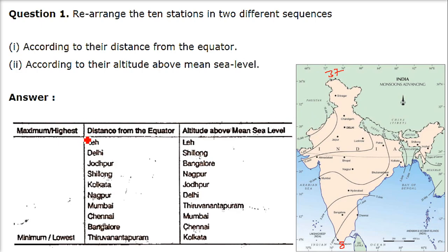So distance from the equator — the maximum should be here and the minimum should be here. We have Thiruvananthapuram, then Bangalore, then Chennai, then all this. So let us go by the highest one here.